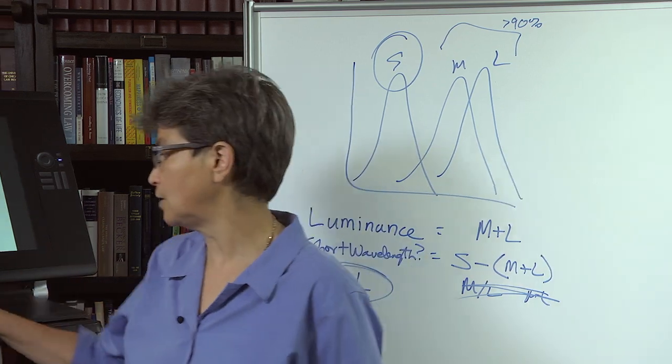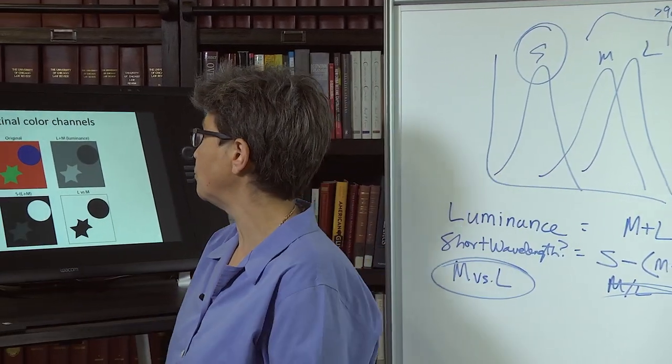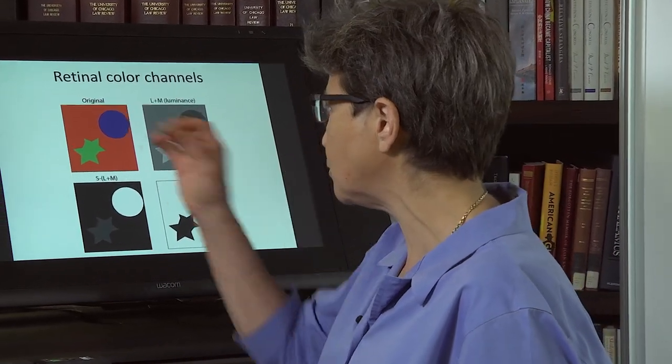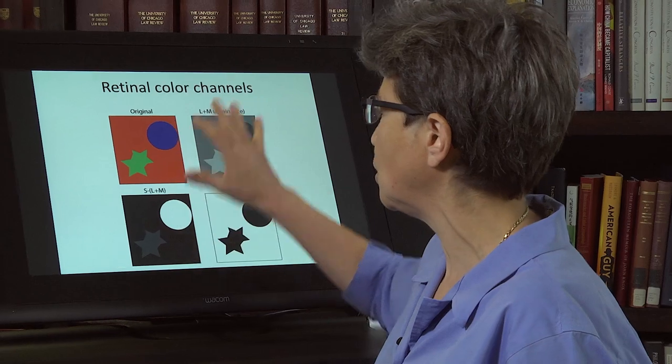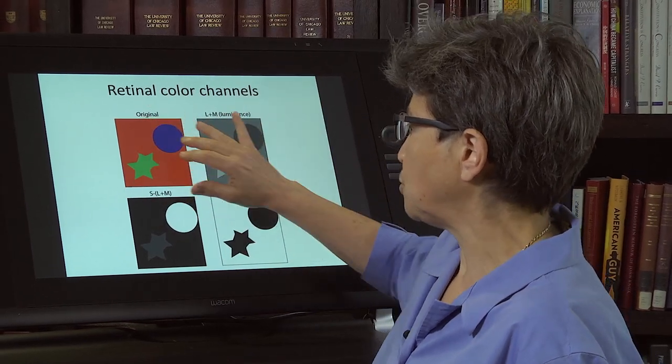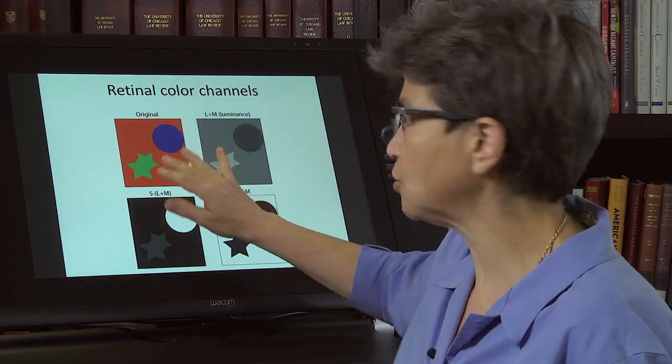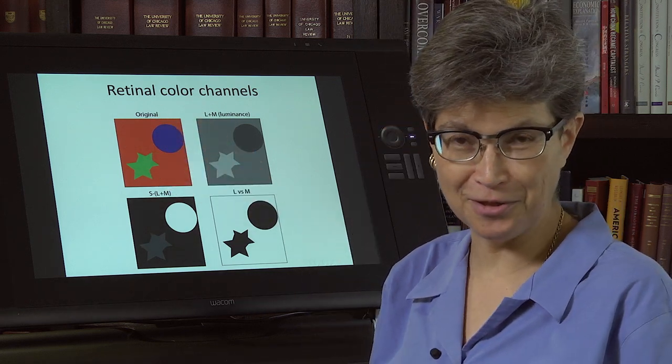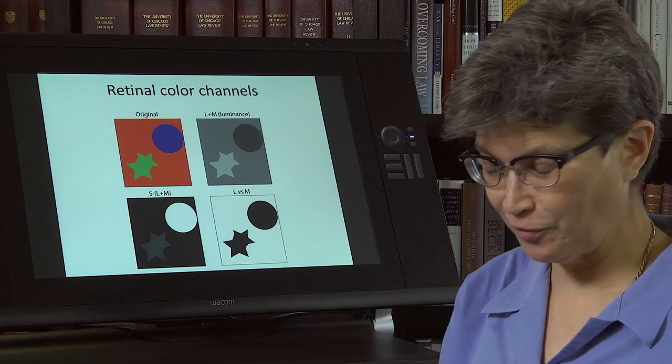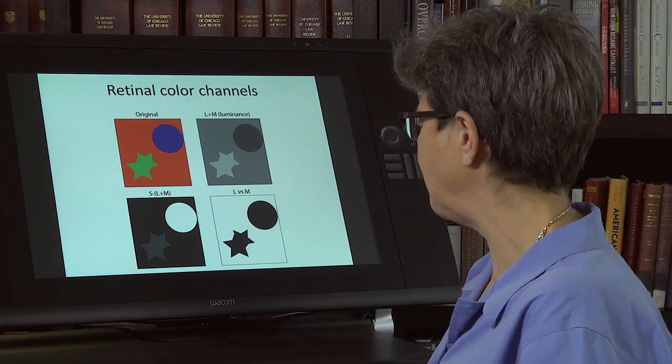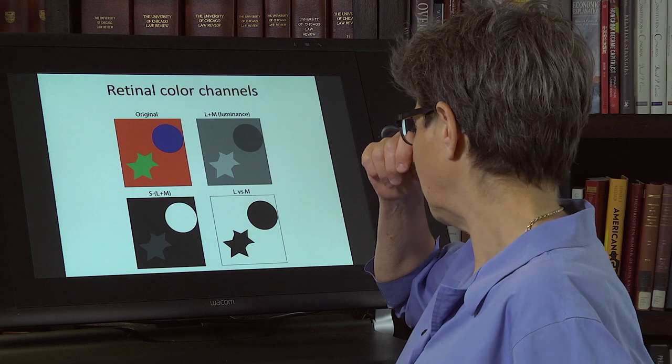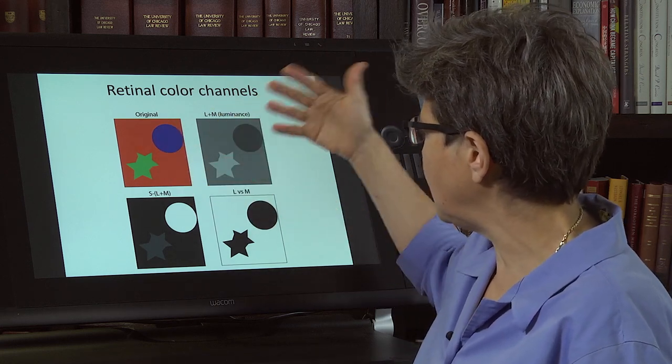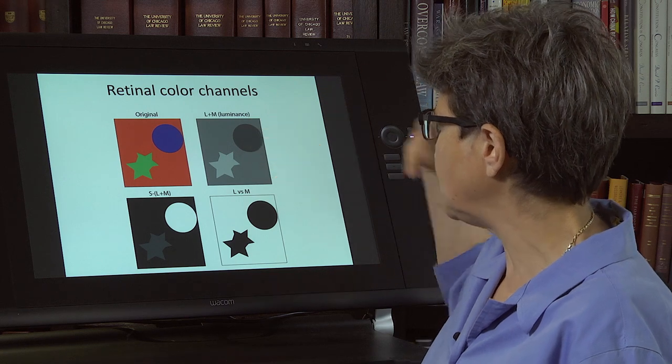So let's look at that here. Here are the schema of what these different channels responses would be to this picture. It's a very stylized picture. Here we have red, blue, and green. And apologies to those of you in the audience, roughly 5% of the men who are colorblind.